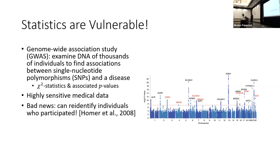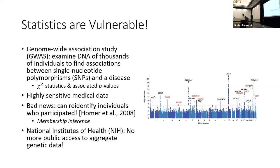People participating in medical trials for socially stigmatized diseases — such as HIV/AIDS — may not want their positive status revealed. Unfortunately, work by Homer et al. in 2008 showed that under certain conditions you can identify who participated in a GWAS study. This membership inference attack — inferring whether someone was a member of the dataset — was taken very seriously: the US National Institutes of Health restricted public access to genetic data aggregates, requiring a lengthy approval process.